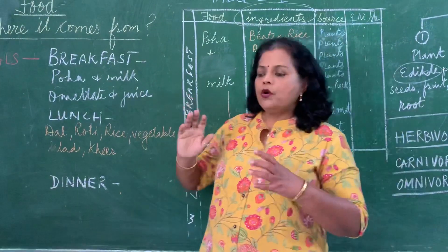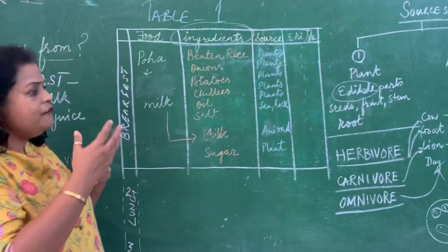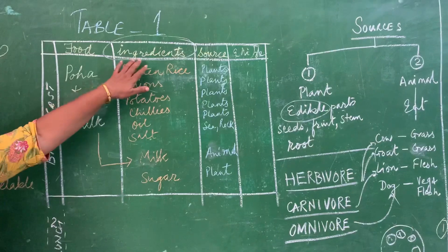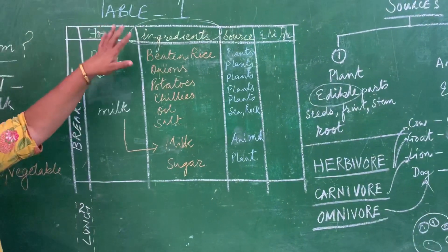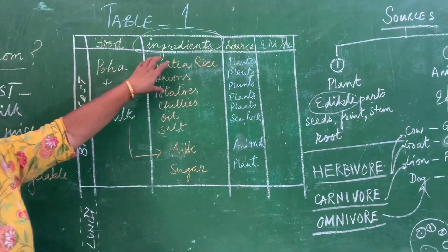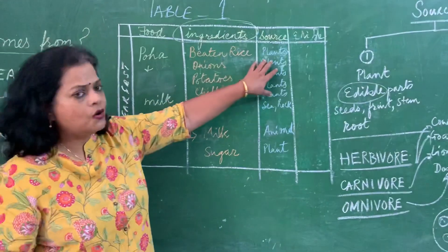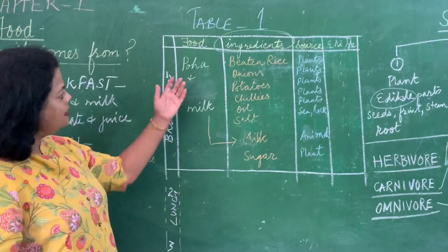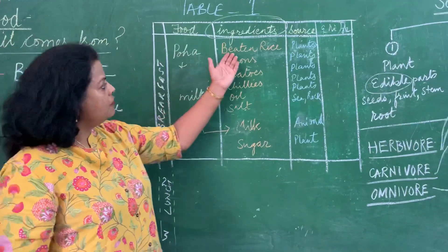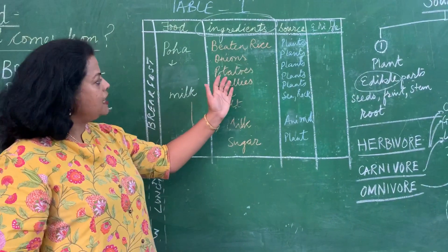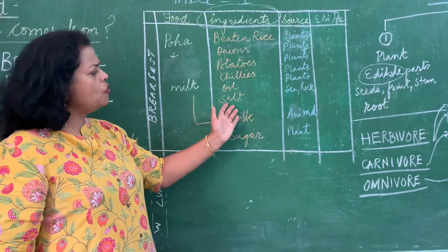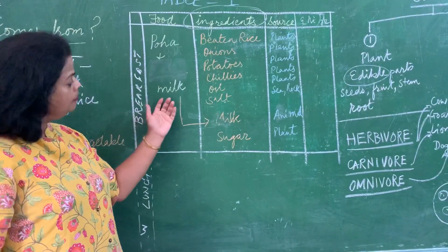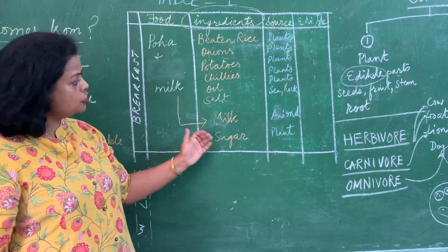Now, children, poha is made of many different things. And those different things are called ingredients. So let's take a table — look here — you'll tell your ingredients and then we'll write the source. So let's take poha: beaten rice, onions, potatoes, chilies, oil, salt, and many more spices. Then I have a cup of milk — milk has milk and sugar.